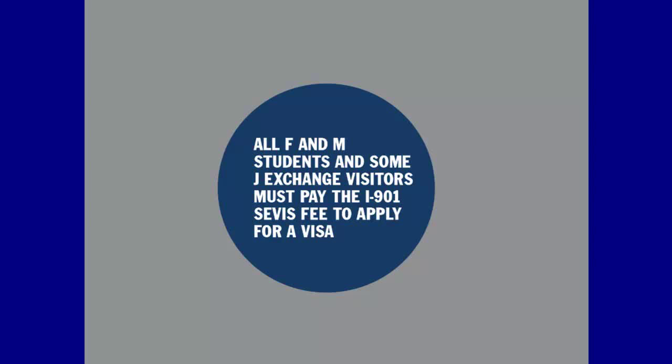Electronic payment in U.S. dollars by credit card on fmjfee.com, or payment in U.S. dollars by check, money order, or bank draft drawn on a U.S. bank and mailed to an address in the United States. We will also direct you to instructions for payment using an agent of Western Union QuickPay, which has agents in more than 130 countries worldwide.